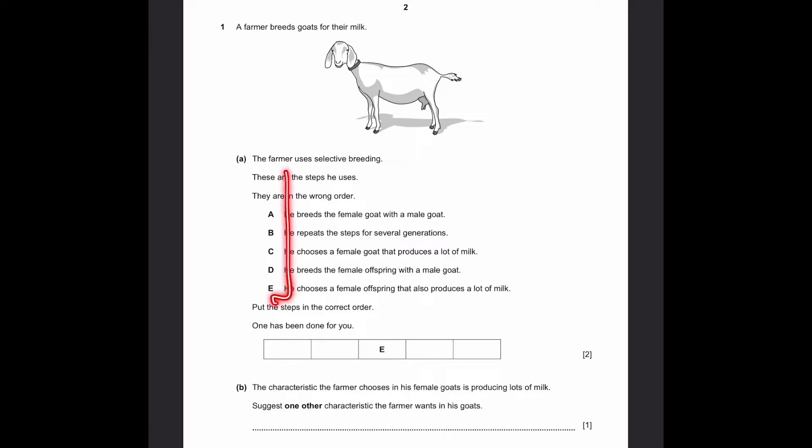So we have these 5 steps A through E. Put the steps in the correct order. What's been done for you is the third step, E. So what's the first step? Let's read these. He breeds the female goat with the male goat - that's A. Which female goat are we talking about? He breeds the steps for several generations. Which steps? He chooses a female goat that produces a lot of milk. This sounds right for the first step because he needs to choose a female goat before breeding it. So first step is C. Second step is A, to breed it. Third one is E, the female offspring that also produces a lot of milk. Next, he breeds the female offspring with a male goat - that's D. And finally is B, repeating all of these 4 steps for several generations.